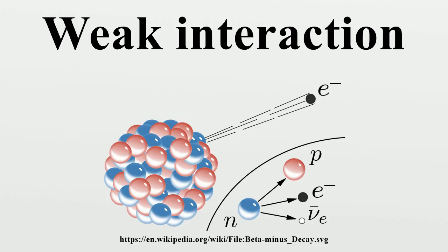All fermions have a weak isospin value of either plus one-half or minus one-half. For example, the up-quark has a T3 of plus one-half and the down-quark minus one-half. A quark never decays through the weak interaction into a quark of the same T3. Quarks with a T3 of plus one-half decay into quarks with a T3 of minus one-half and vice versa.